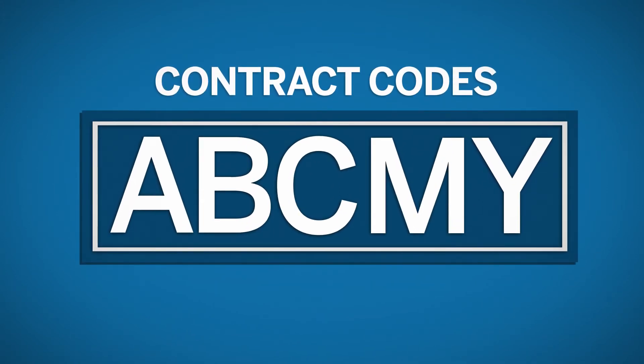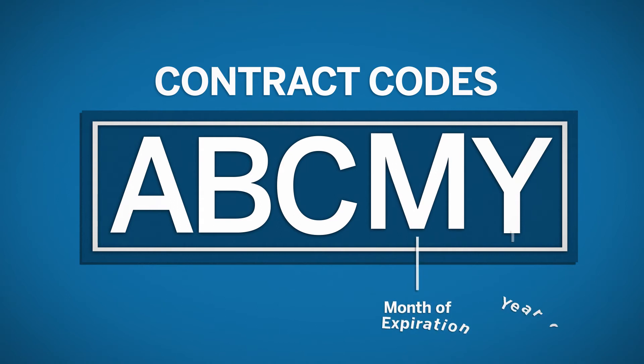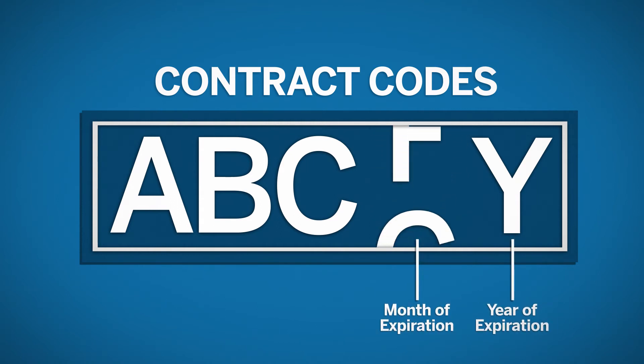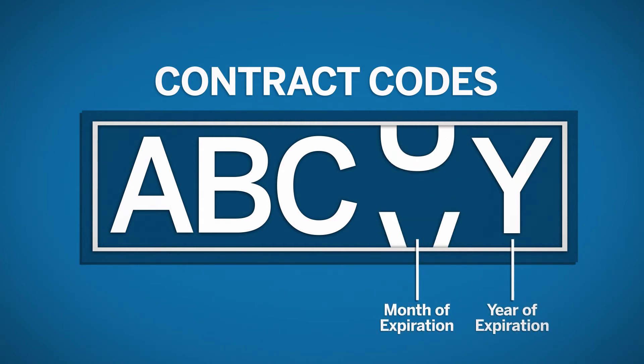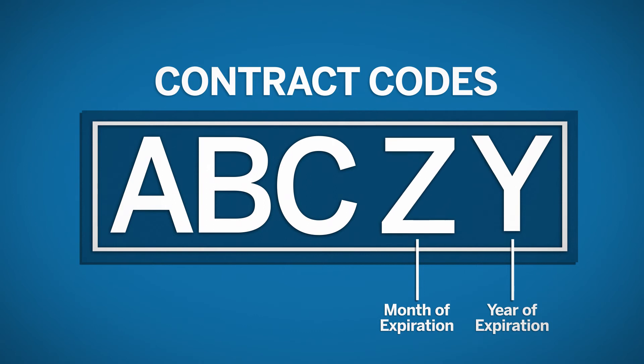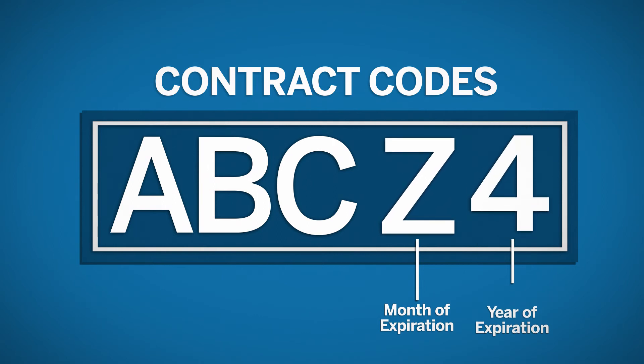The letter following the contract code always indicates expiration month, and expiration year is indicated following the month as a numeric value.